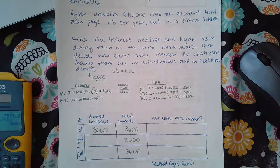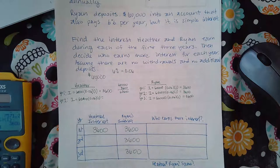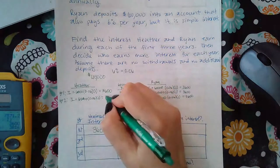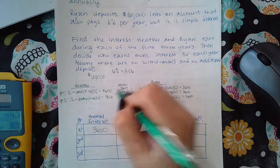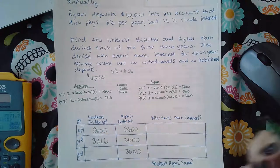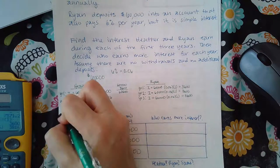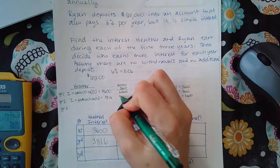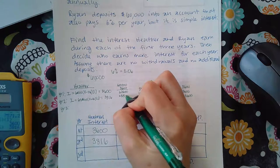So $63,600 times 0.06 times one is $3,816. So that's how much interest she earned. But now in order for me to calculate year three, I've got to take that and add it to this number that you had in the account before year two started.